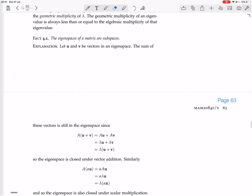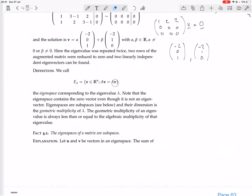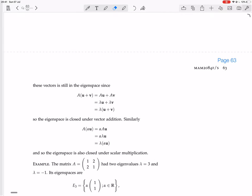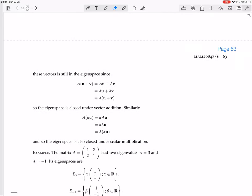So the eigenspace is closed under scalar multiplication. We know that it contains the zero vector. The zero vector does satisfy that equation, even though it's not an eigenvector. So that proves that the eigenspace is indeed a space, is indeed a subspace.